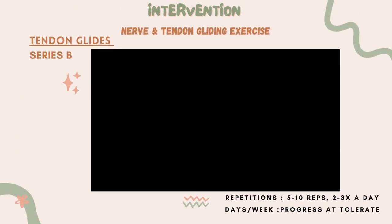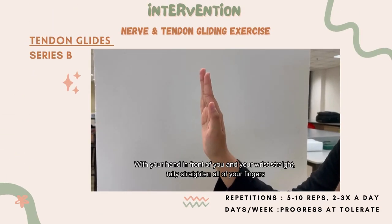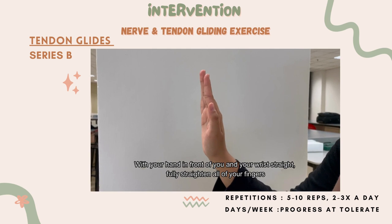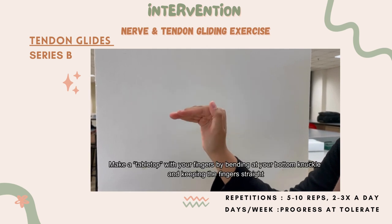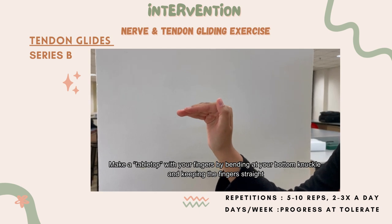For Series B, with your hand in front of you and your wrist straight, fully straighten all of your fingers. Make a tabletop with your fingers by bending at your bottom knuckle while keeping the fingers straight.